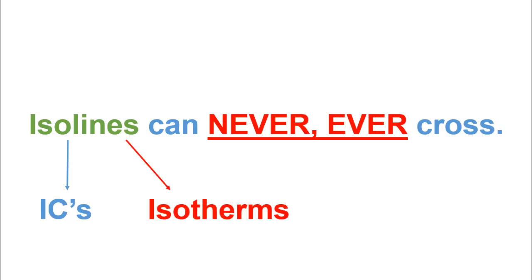In this video, I'll first show that isotherms can never ever cross. Then I'll use the same argument to show that indifference curves can never ever cross as well.